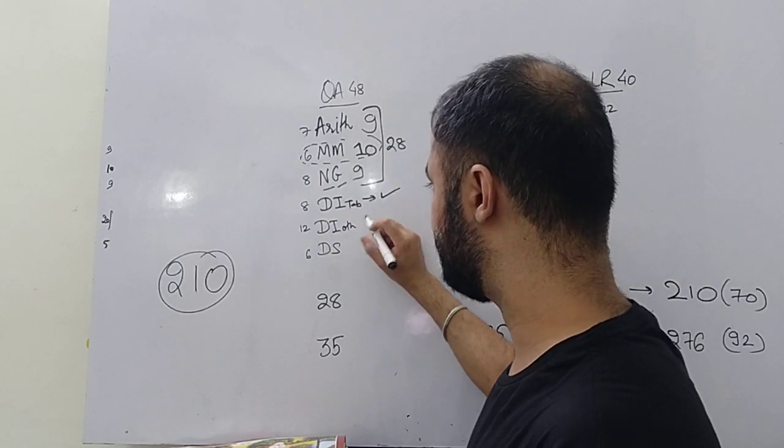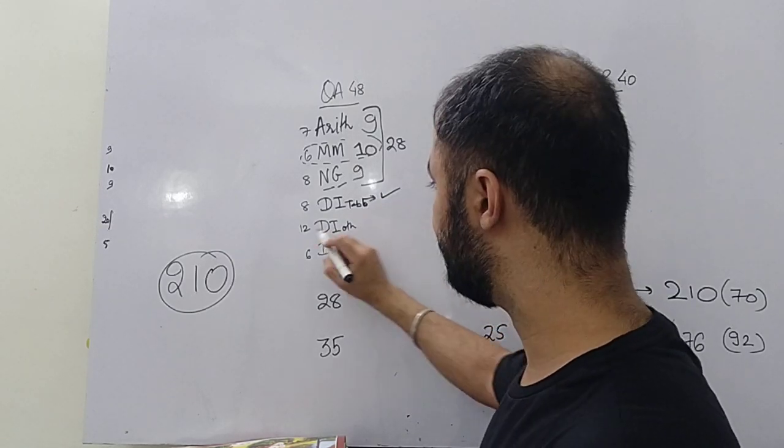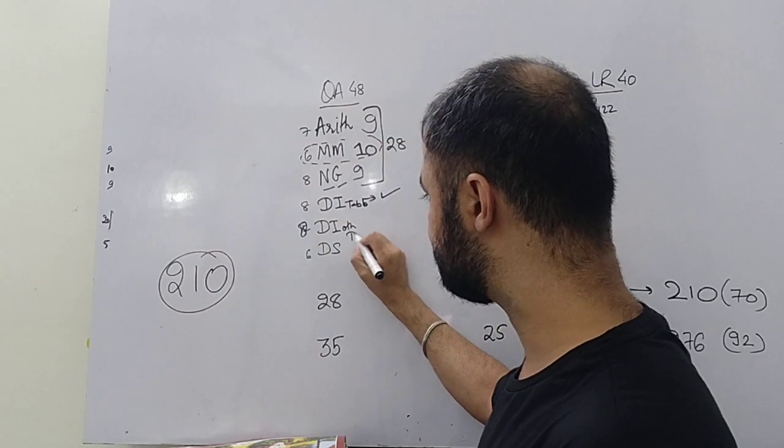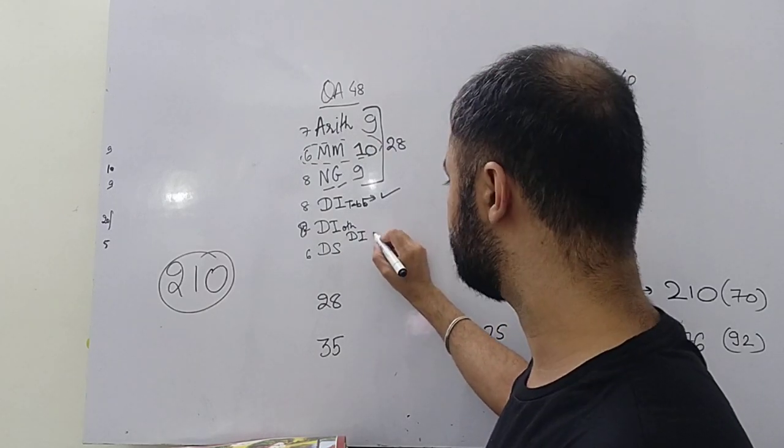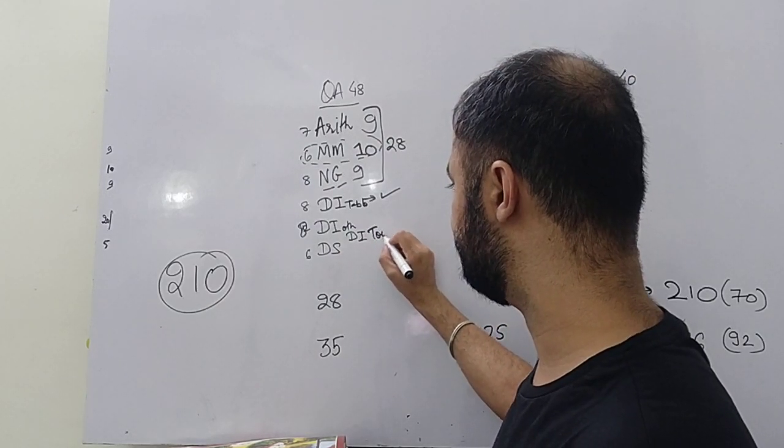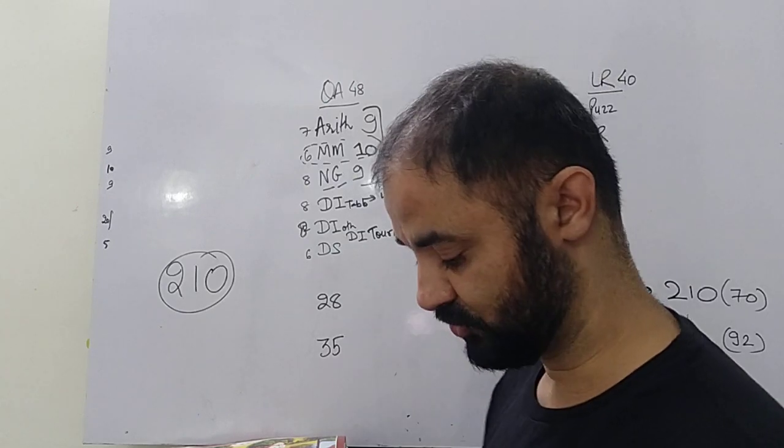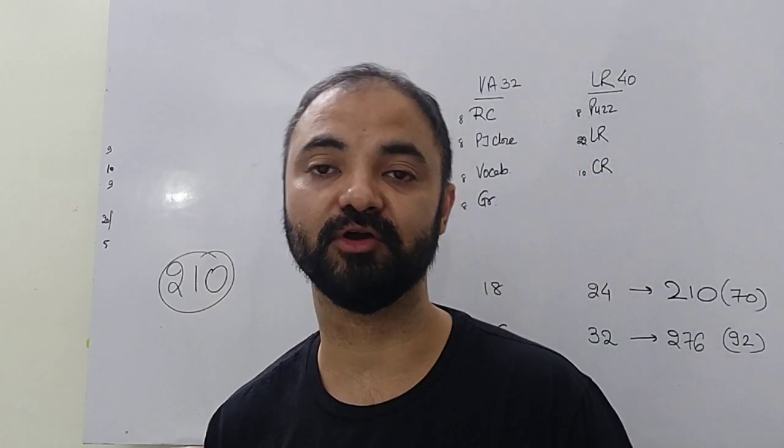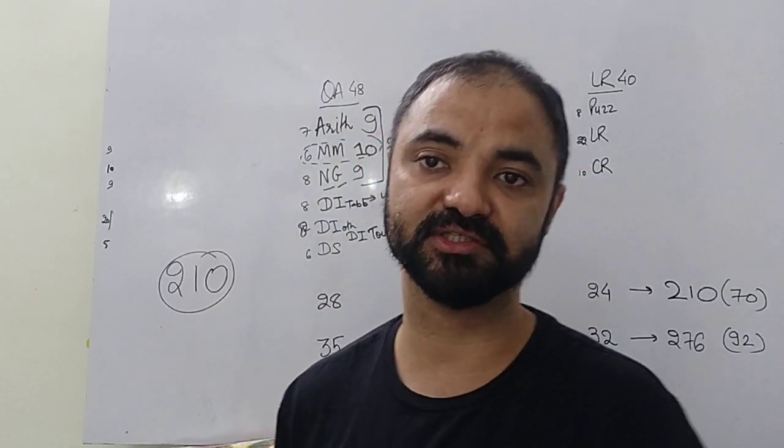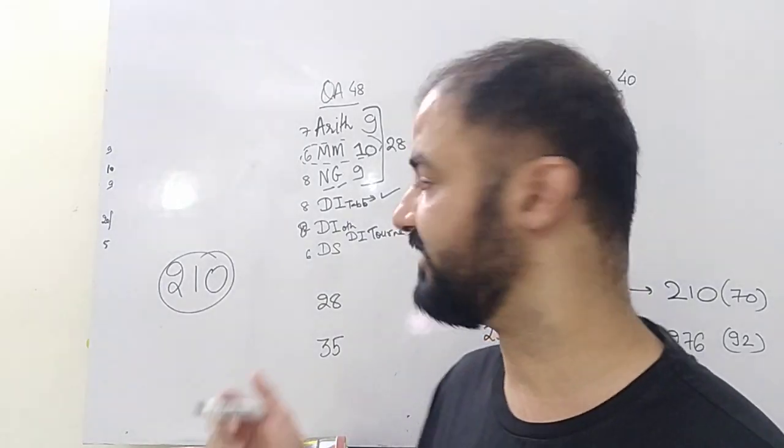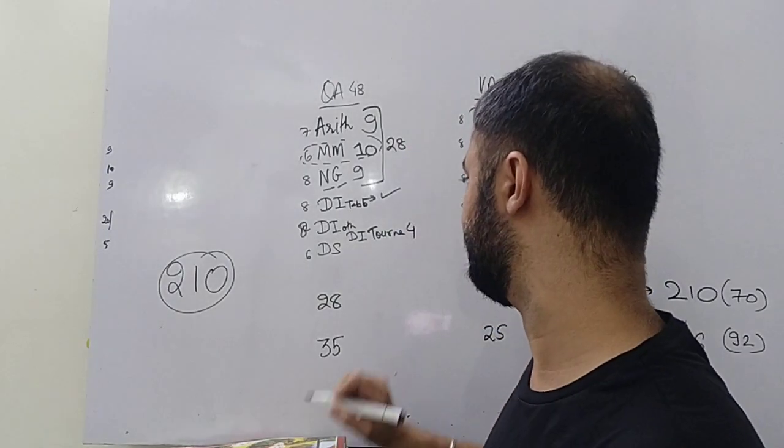DI: 8 questions table-based DI, 8 questions DI other. The first major change which happened here was DI tournament and games. In CAT we have a set for tournament and games, so that kind of set was added in your NMAT as well. Logic-based DI 4 questions was the new thing which was introduced.